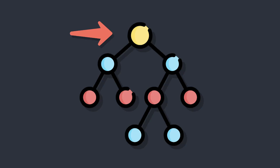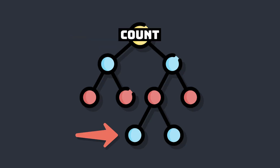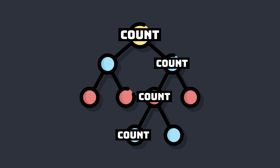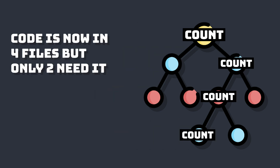If we only use props, let's say we have a parent component with a count property and a child component several levels deep that needs access to this count value. We would need to pass count to every single one of these levels. This introduces many places for error and places that would need refactoring if something were to change in the way that we handle our data.